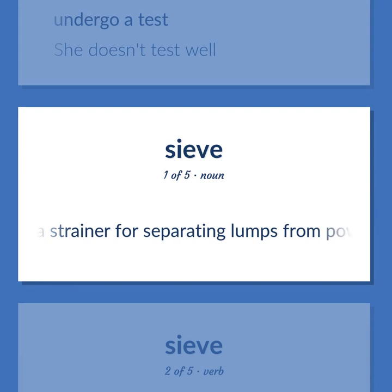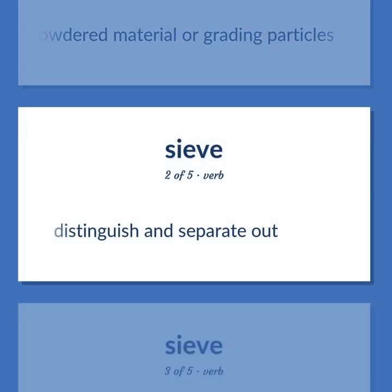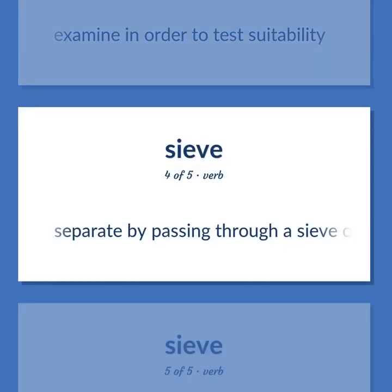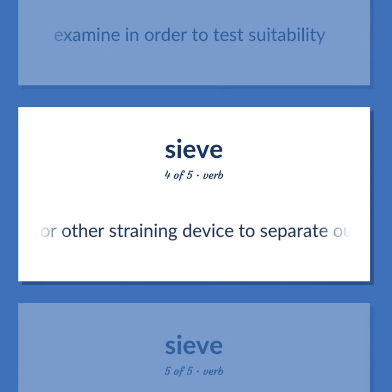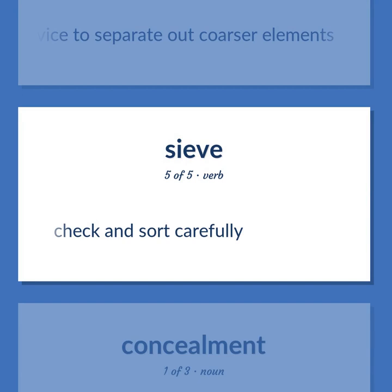A strainer for separating lumps from powdered material or grating particles. Distinguish and separate out. Examine in order to test suitability. Separate by passing through a sieve or other straining device to separate out coarser elements. Check and sort carefully.